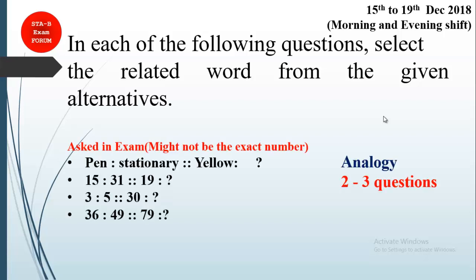The next questions are from the analogy category. Again, you can expect two to three questions in the analogy category where you have to select the related word from the given alternatives. For example: pen is to stationary as yellow is to what? You find the relationship — pen is a type of stationary, so yellow is a type of color, making 'color' the correct answer.